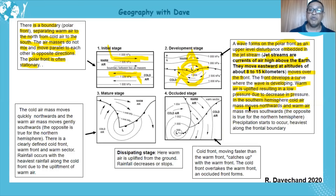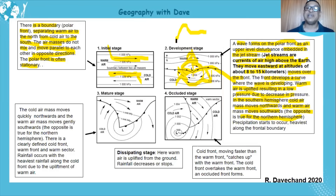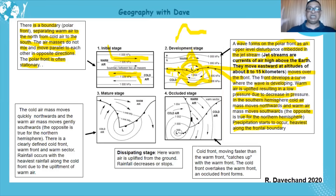In the southern hemisphere, cold air moves northwards due to the disturbance and the wave, while warm air moves southwards. The cold front will move southwards. Precipitation starts to occur, and it is heaviest along the frontal boundary.